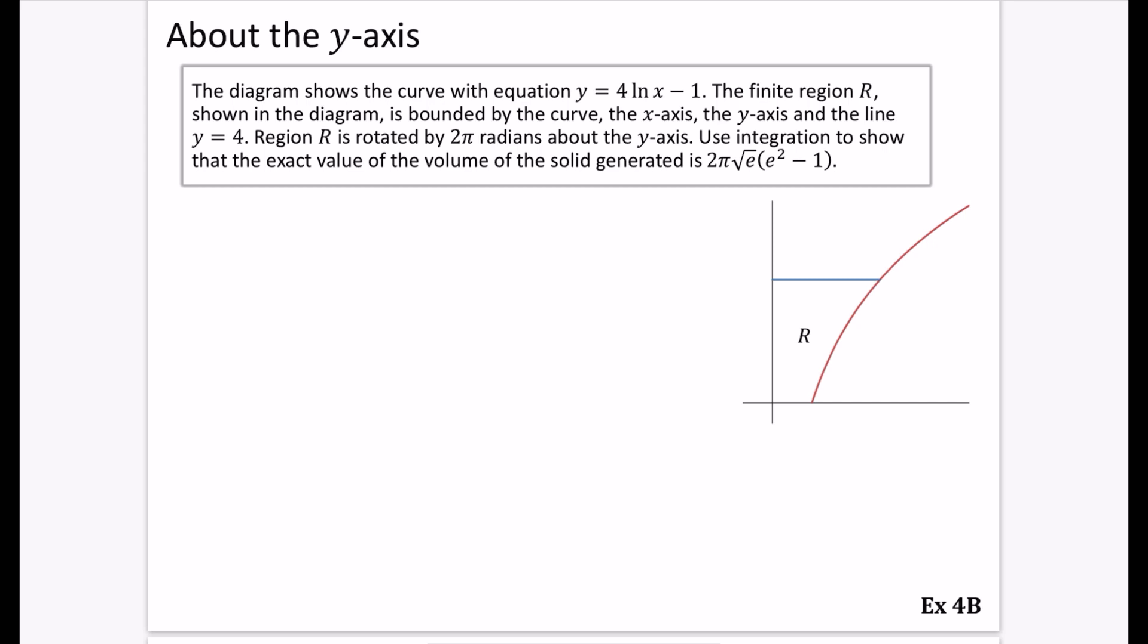So the diagram shows the curve with equation y equals 4 ln x minus 1. So here's my y equals 4 ln x minus 1. And it says the region R shown in the diagram is bounded by the curve, the x-axis, the y-axis, and the line y equals 4.